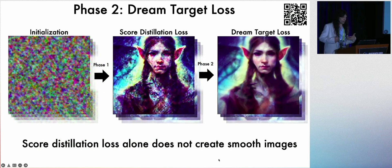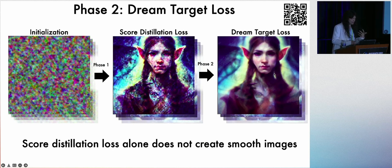So score distillation loss worked pretty well, but it does have some undesirable side effects. Like this looks fairly noisy, and I'd like it to be smooth. So how can we fix this? We introduce something called dream target loss to do that.